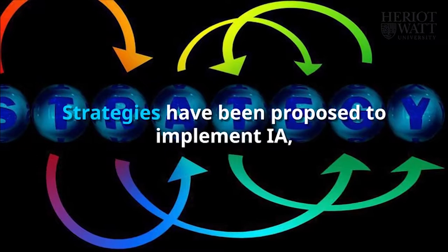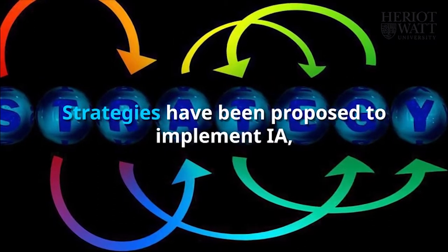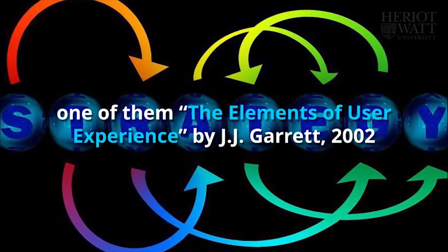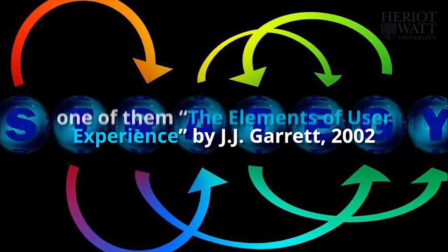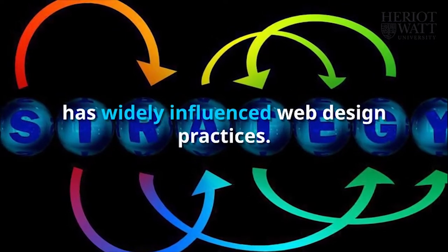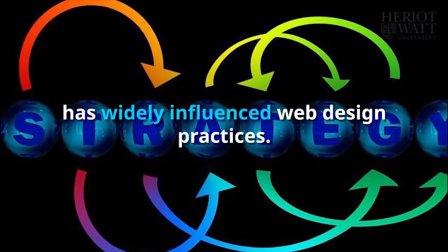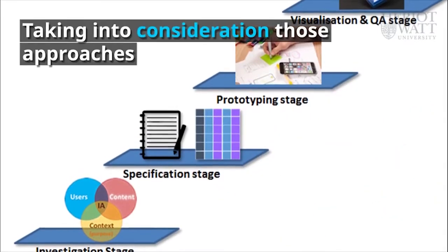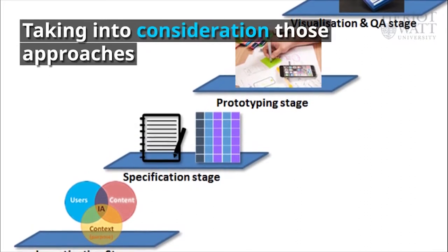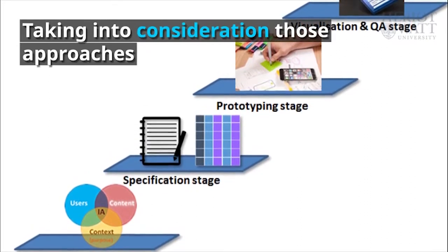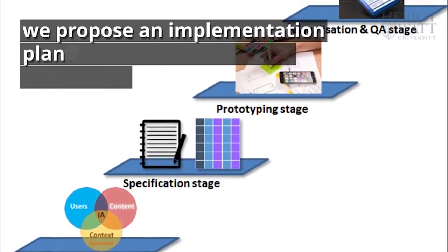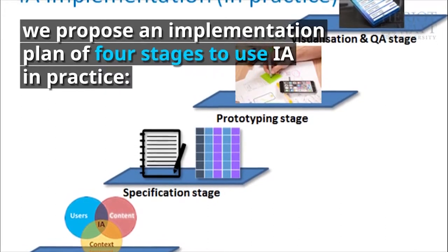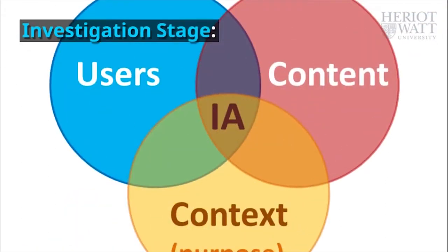Strategies have been proposed to implement IA. One of them, the Elements of User Experience by Jesse Garrett, has widely influenced web design practices. Taking into consideration those approaches, we propose an implementation plan of four stages to use IA in practice.